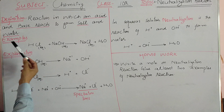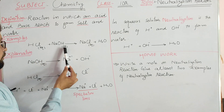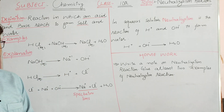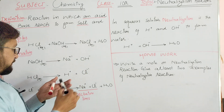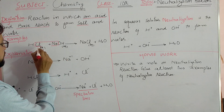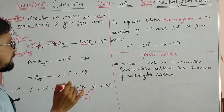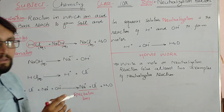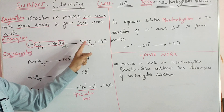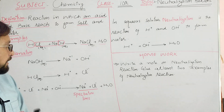For example, we have an aqueous solution of hydrochloric acid and an aqueous solution of sodium hydroxide. When we mix and react these two aqueous solutions, the products should be sodium chloride (NaCl). When hydrogen ion from the acid and hydroxyl ion from the base combine, these two form water. When we have salt and water as products, we have a neutralization reaction.